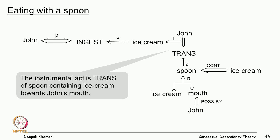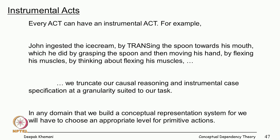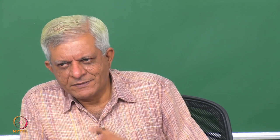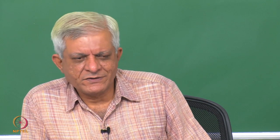More specifically, the act was that he transferred the spoon — which contained the ice cream — from the ice cream to his mouth. Every act can have instrumental acts: John ingested the ice cream by transferring the spoon toward his mouth, which he did by grasping the spoon, then moving his hand by flexing his muscles, by thinking about flexing his muscles, and so on. You can always keep breaking down into smaller instruments, but in representation we truncate this chain at some comfortable level of abstraction.